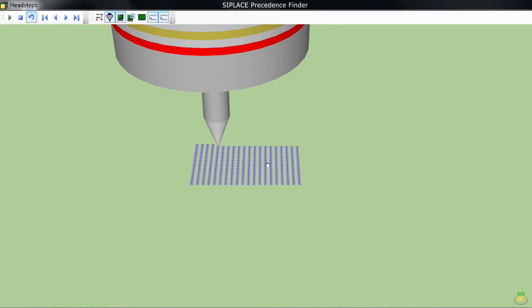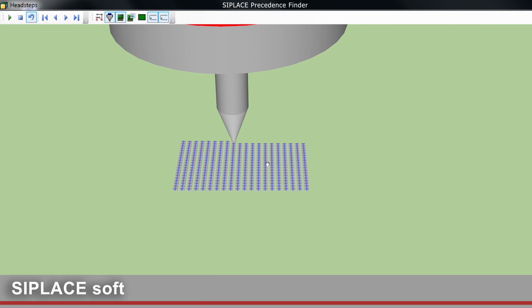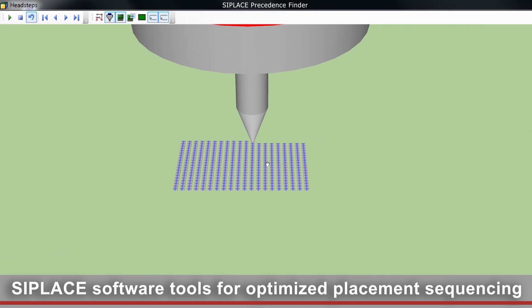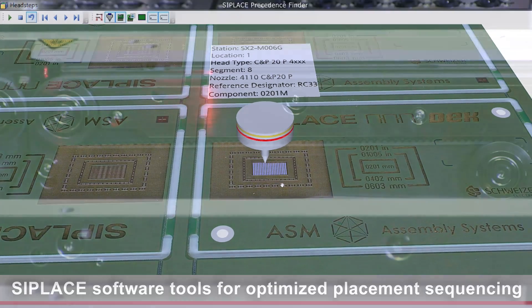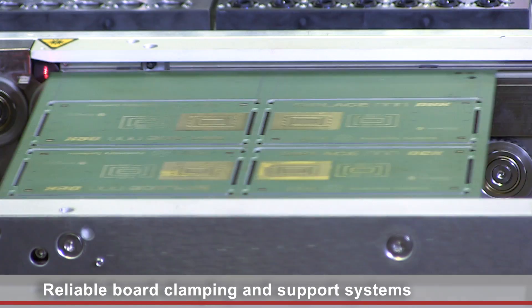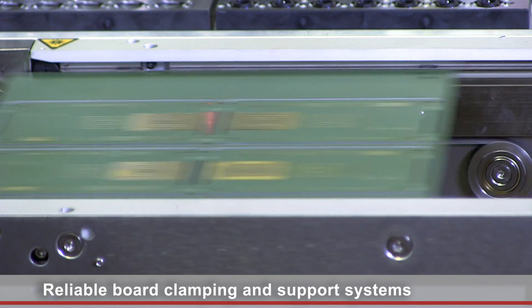Other C-Place functions for the workflow with super-small metric 0201 components include software tools like the C-Place precedence finder for optimized placement sequencing, reliable board clamping and support systems, and accurate fiducial control.